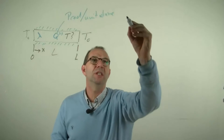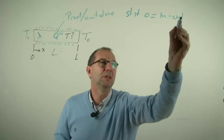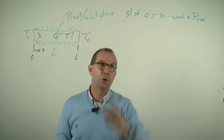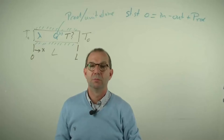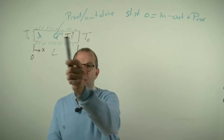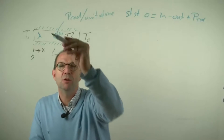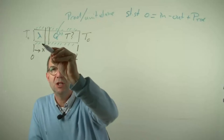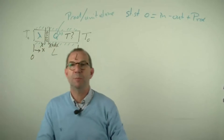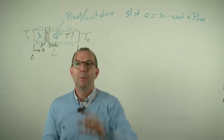We start with a heat balance. In steady state: 0 equals in minus out plus production. But first I need to specify a control volume. It's not a good idea to use the entire rod as the control volume, because then I can't determine the internal temperature distribution. To find the distribution, I need to look at an arbitrary small part of the rod situated between x and x plus dx. I keep it generic — it can be placed anywhere.